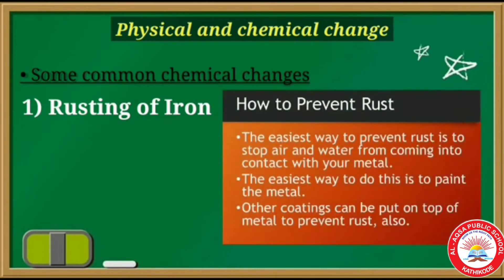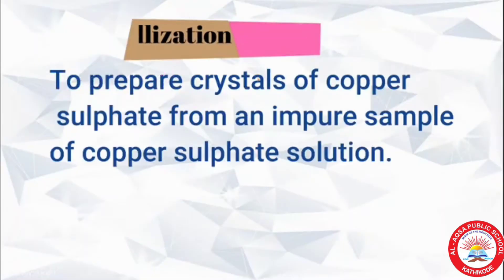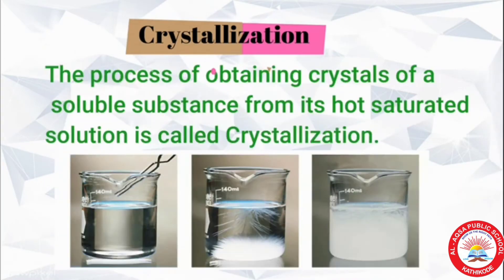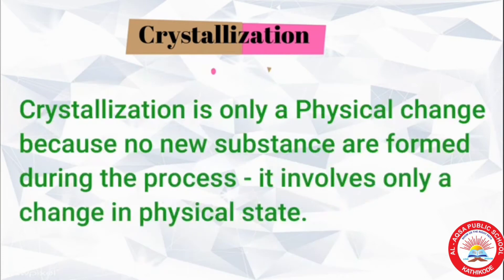So we can prevent rusting by: first, stopping contact of air and water with the metal; second, painting or greasing; and third, galvanization. Next, the process of crystallization — it is an example of physical change. Crystallization is the process of obtaining crystals of a soluble substance from its saturated solution. It is only a physical change because no new substances are formed; it involves only a change in physical state.